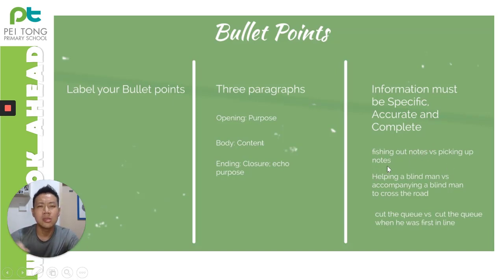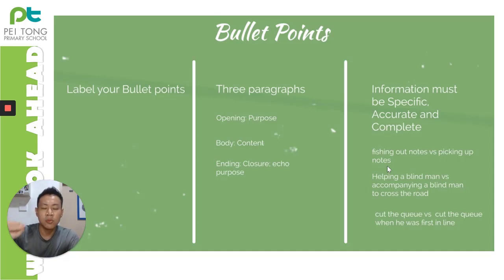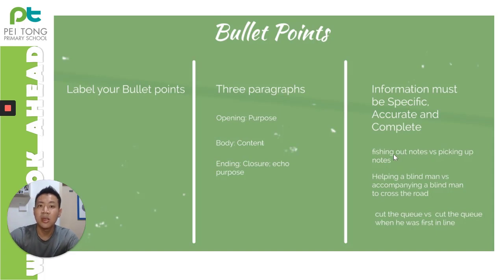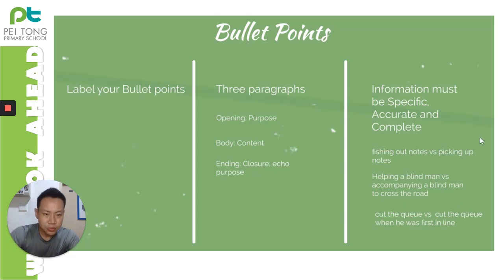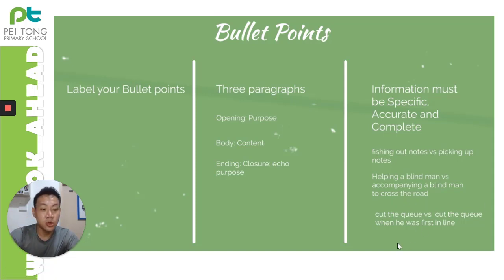Information must be specific, accurate, and complete. For example, 'fishing out notes from the pond' versus 'picking up notes' — there is a difference in the action. Use what has been given in the context and pictures to be as accurate as possible. 'Helping a blind man' versus 'accompanying a blind man to cross the road' — there is a difference. 'Cut the queue' versus 'cut the queue when he was first in line' — be careful not to change the meaning.